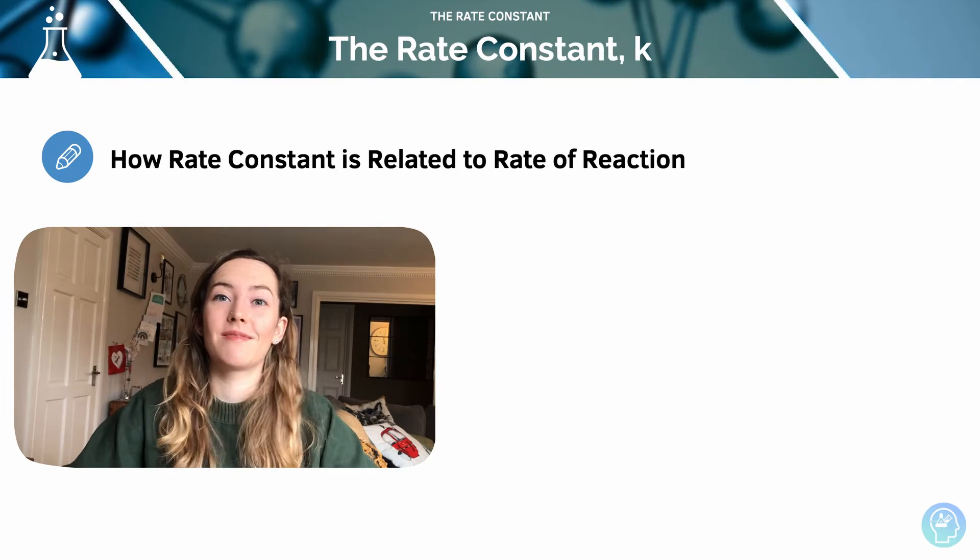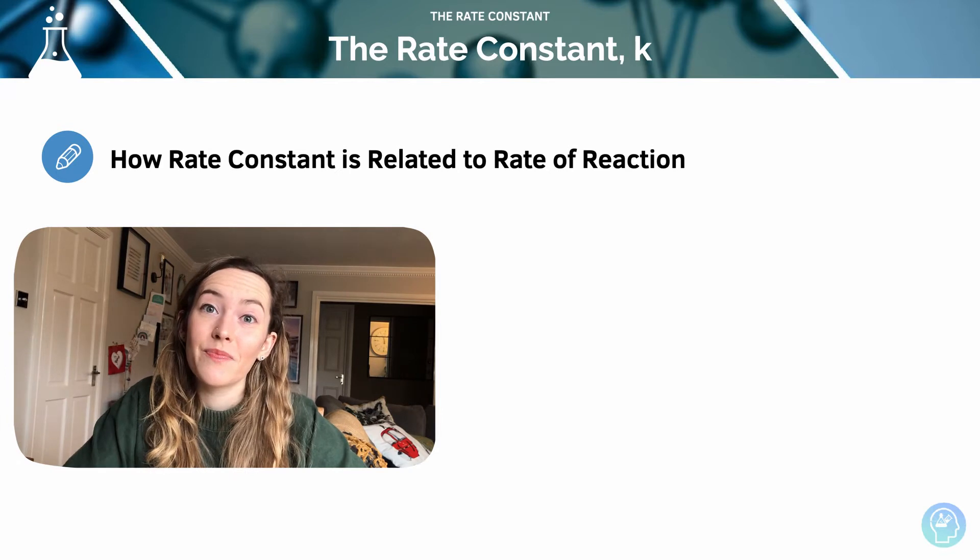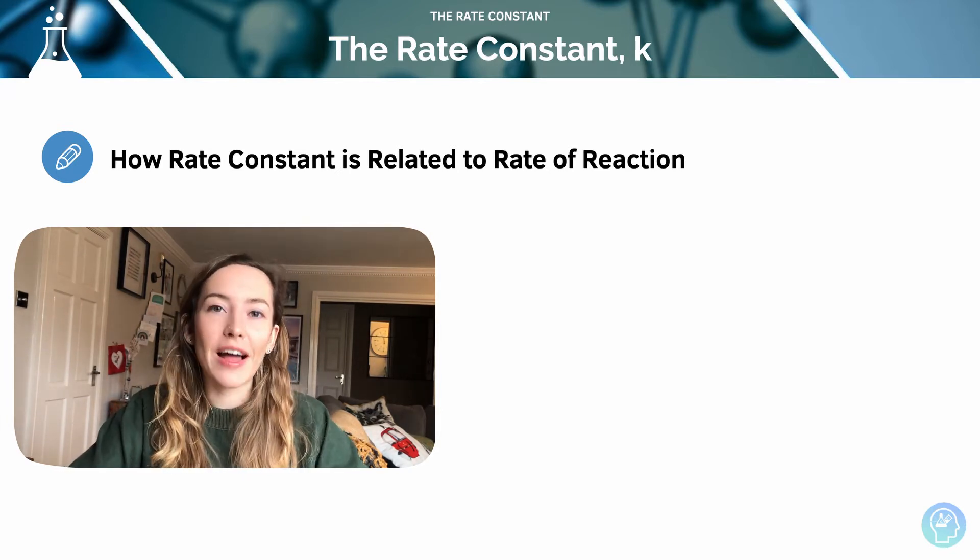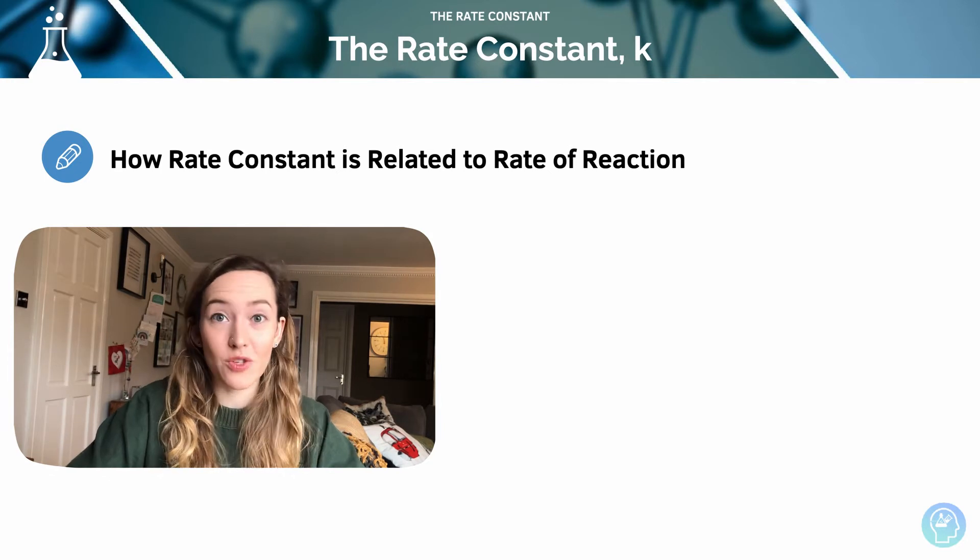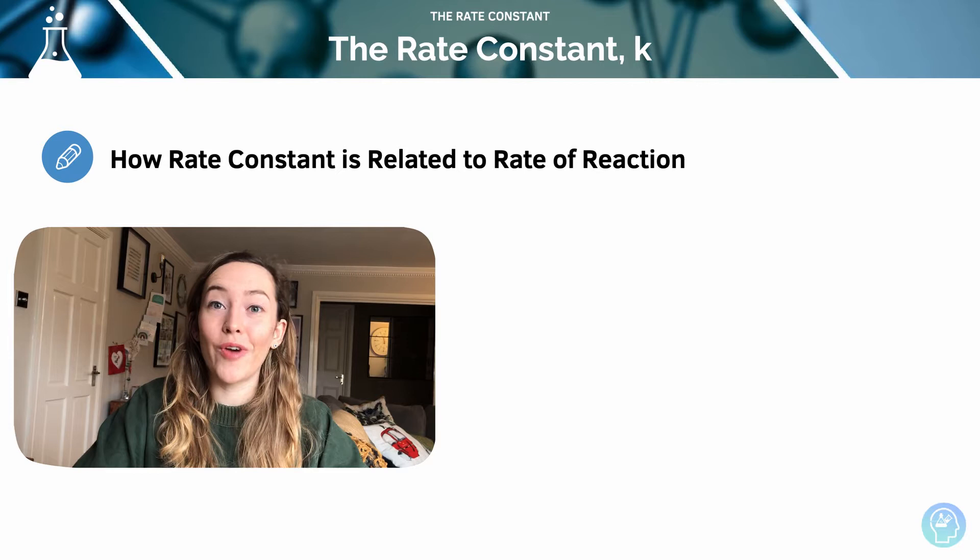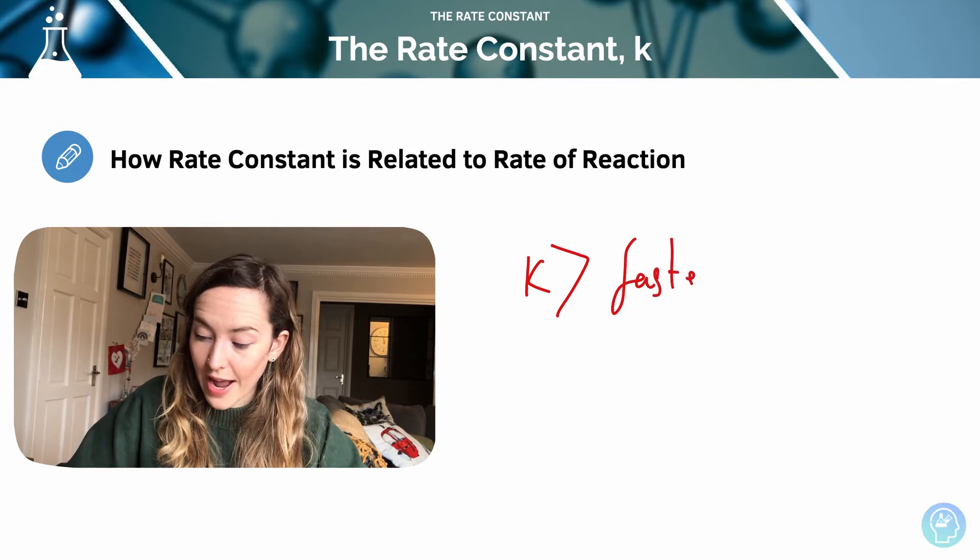The rate constant, k, is a number that connects the concentration of reactants to the rate of reaction and we can calculate a value for it and units as well and that's what we're going to look at in this lesson. It's different for every single reaction and it increases with temperature. The larger the value of k, the faster the reaction.